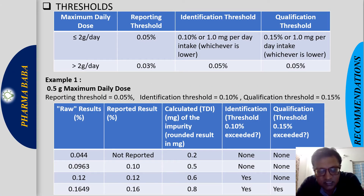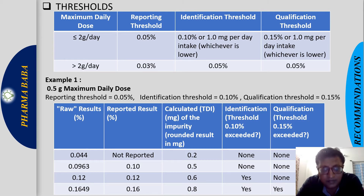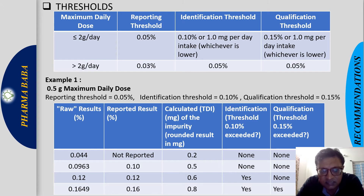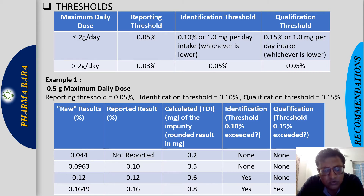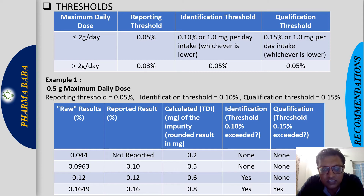Now let's understand the different thresholds and how to report and decide impurity limits for the drug substance as per ICH Q3A. The maximum daily dose is the key parameter — ICH Q3A classifies it into two parts: less than or equal to 2 grams per day, and greater than 2 grams per day. If the maximum daily dose is less than 2 grams per day, the reporting threshold is 0.05%.